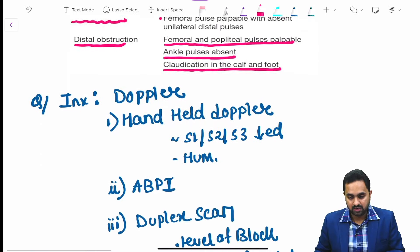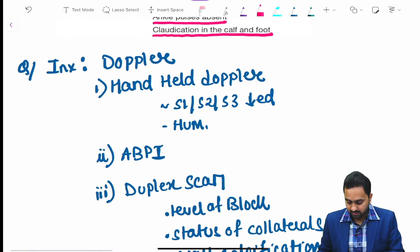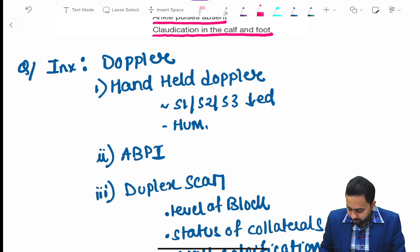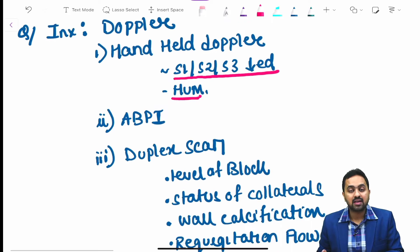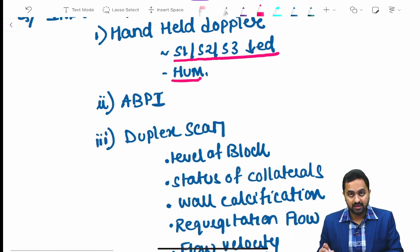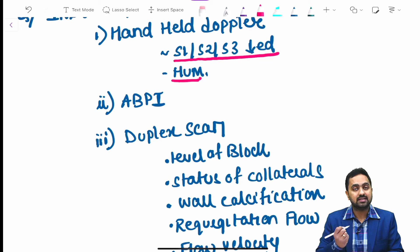Regarding investigation, we do a Doppler, an ultrasound. In handheld Doppler, you will find S1, S2, S3 are decreased and there will be a continuous hum. ABPI is ankle brachial pressure index which we shall discuss subsequently.